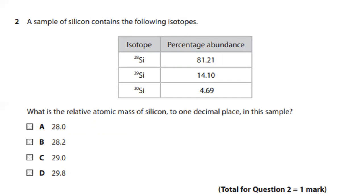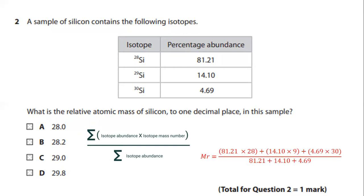So the question is what is the relative atomic mass of silicon to one decimal place in this sample? You can easily apply the values to this formula and get the answer like this.